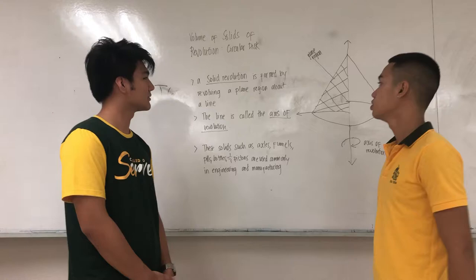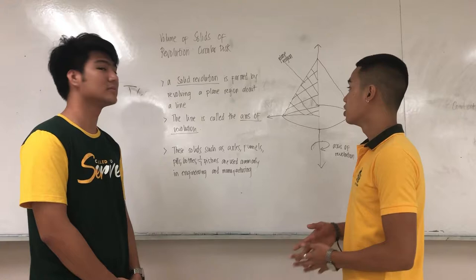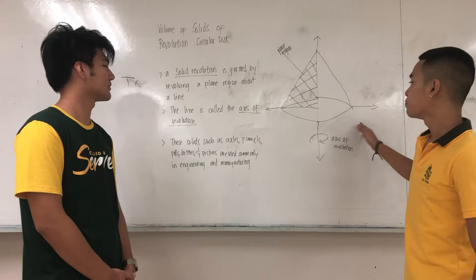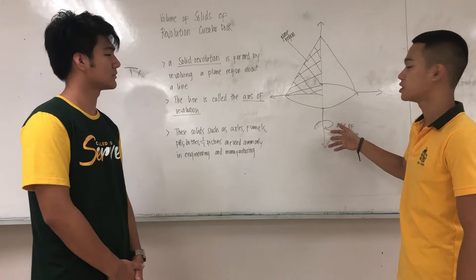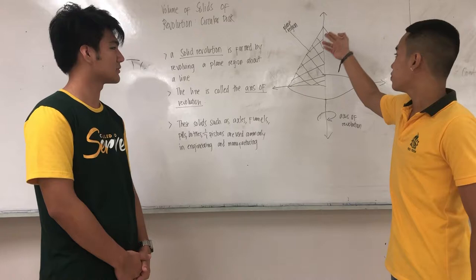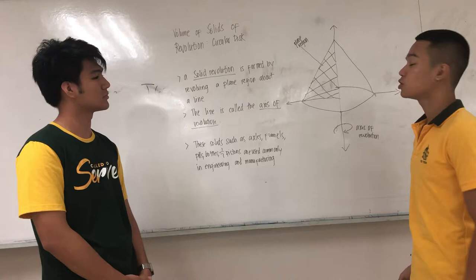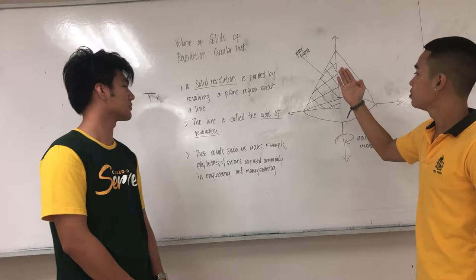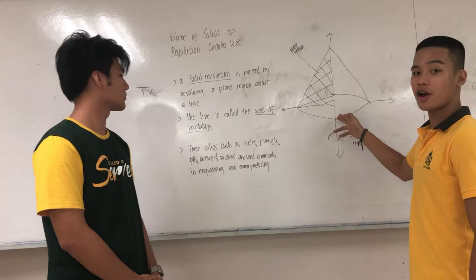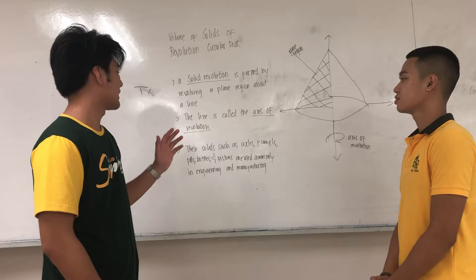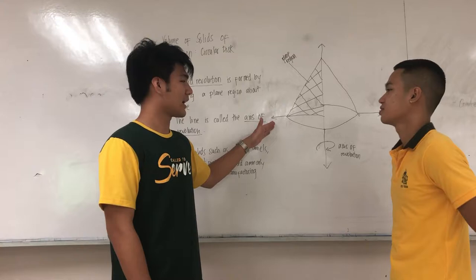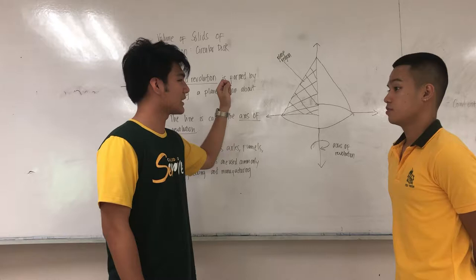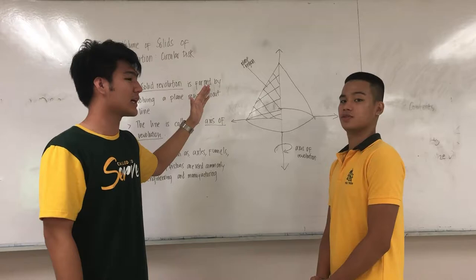What is a solid of revolution? It is formed by revolving a plane region about a line. If you look at our figure here, imagine this is a Cartesian plane. This is the x-axis and this is the y-axis. The origin is at the middle. The plane region formed is a triangle. Once we use this plane region and revolve it around a particular axis, it will form a cone. The line is called the axis of revolution. The axis of revolution could be the x-axis, the y-axis, or even any line in the Cartesian plane — for example, y equals 4. It is where the graph is going to revolve to get the volume.